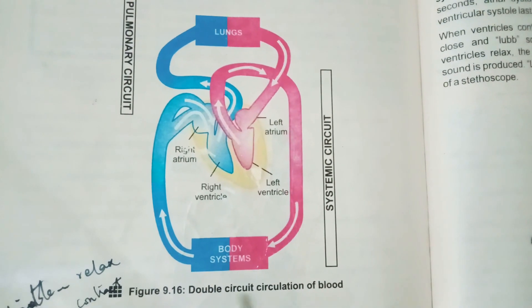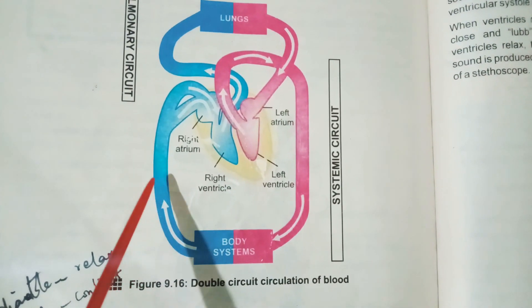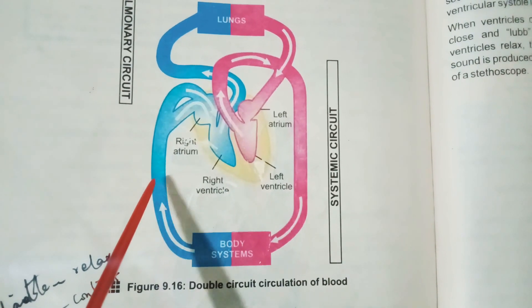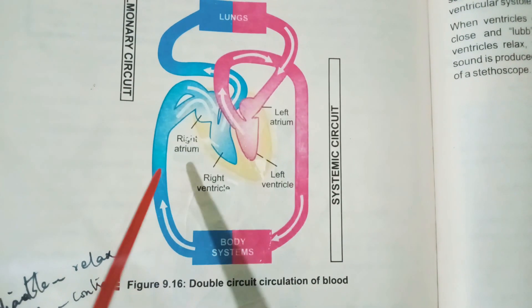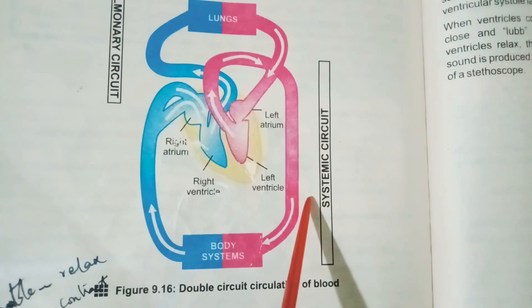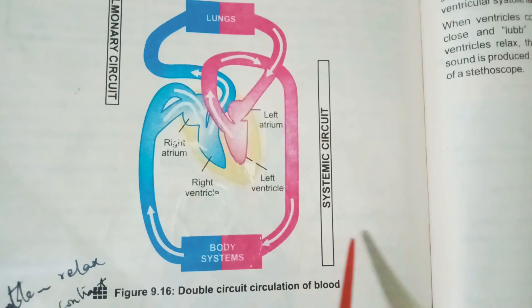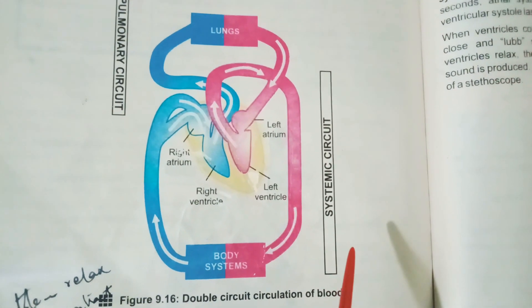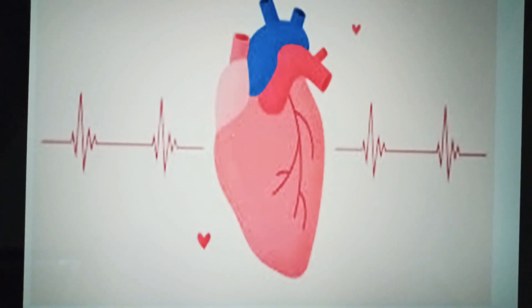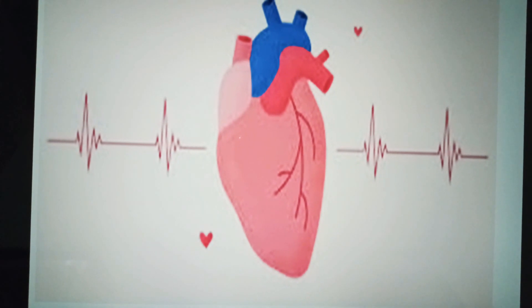Did you know that the blood in the pulmonary circulation is at lower pressure than the blood in the systemic circulation? It gives sufficient time to blood for gaseous exchange in lungs. Now I will discuss about heartbeat.